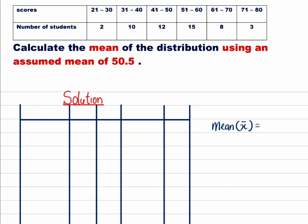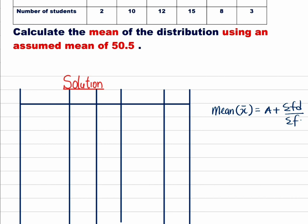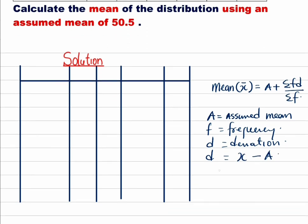The formula is mean, which is denoted by x bar, equals A plus summation fd over summation f. Now you need to understand what these letters stand for. The first letter A stands for assumed mean. Then we've seen f, of course f is frequency. Then we have d, d is for deviation. Now this deviation d is actually x minus A, and of course x is the mid value.